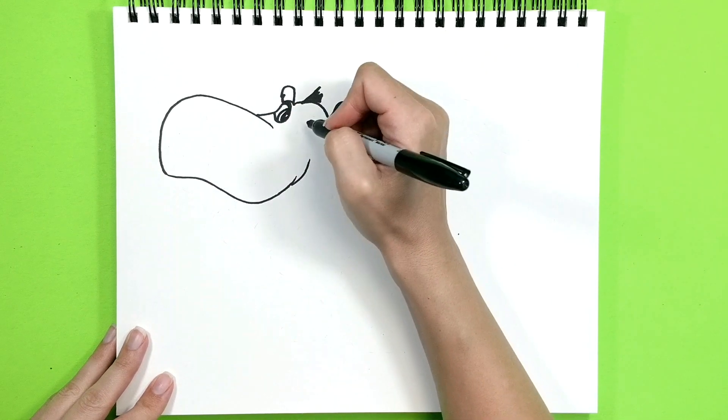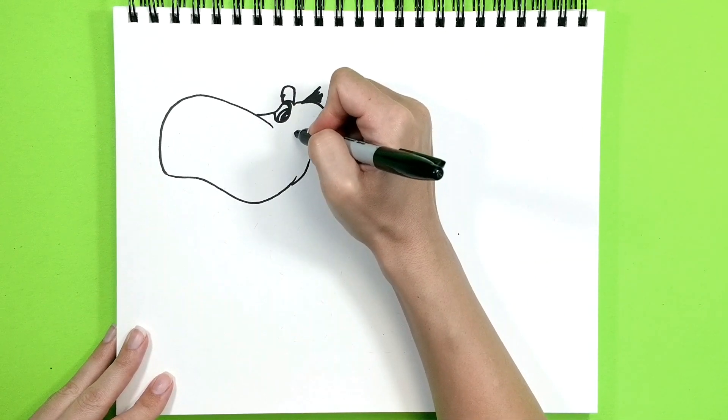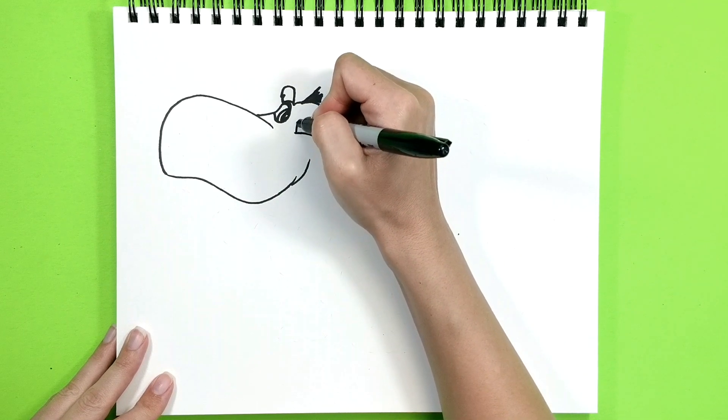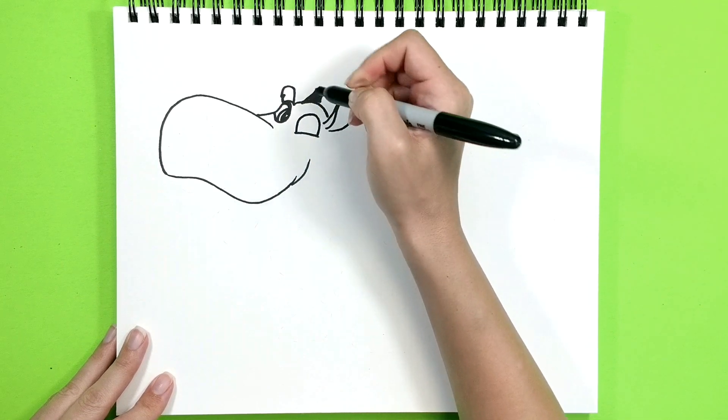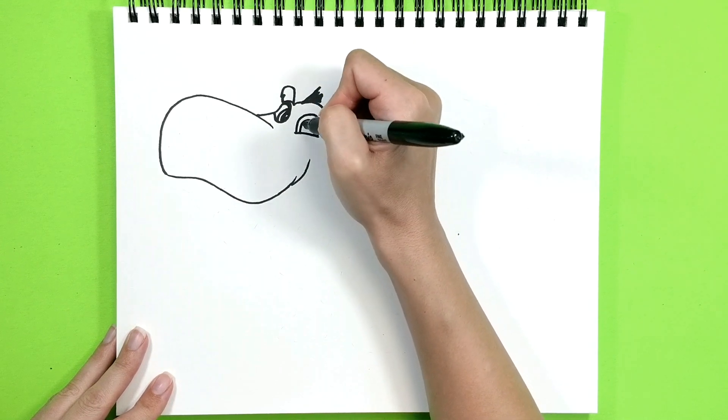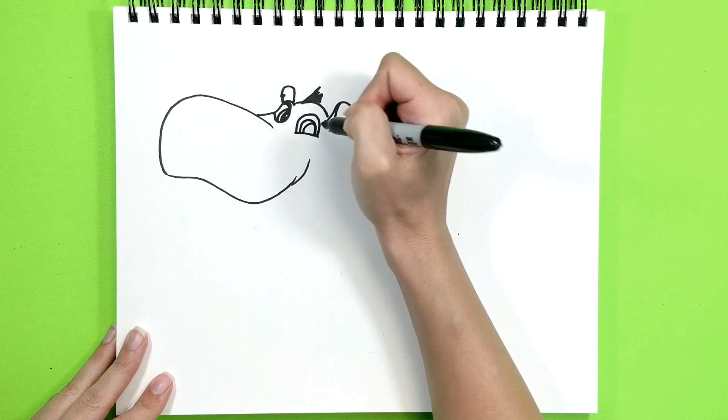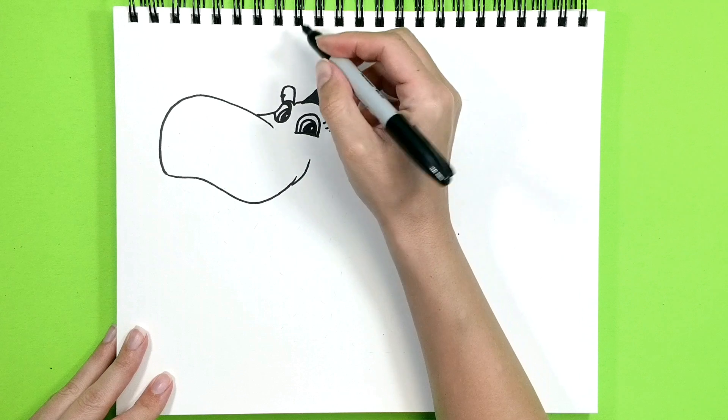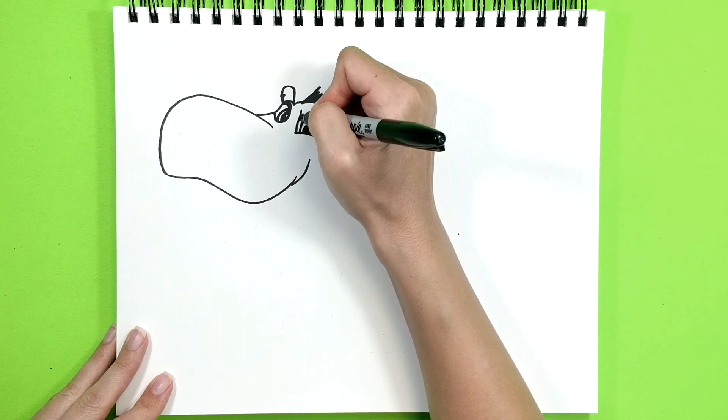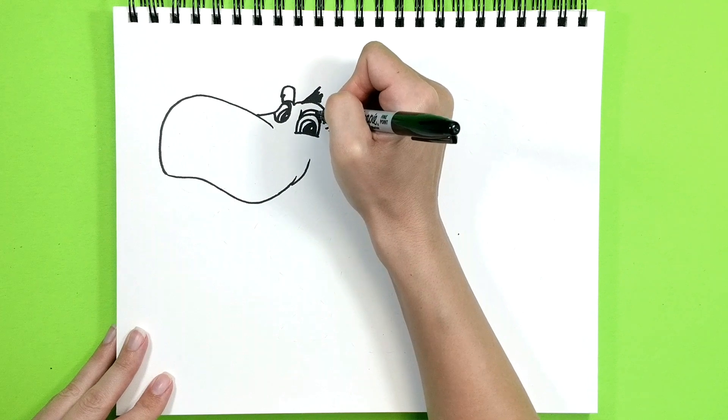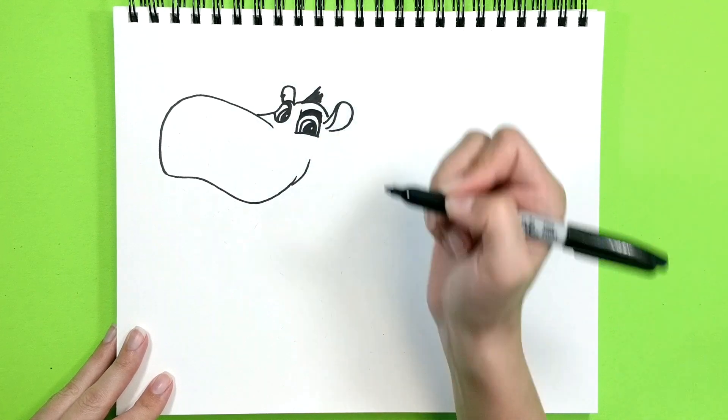Now let's do his right eye. Here we go. And do this circle with a dot circle right here. So you can see his eyes showing. And his eyebrow.